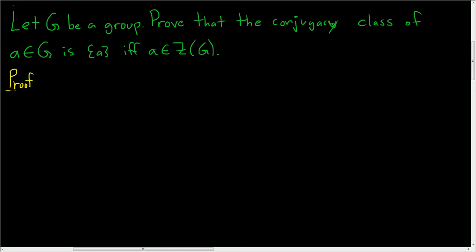There's a lot of terminology and background that's required before understanding this proof. Let's briefly go over it. A is conjugate to B if there exists an X in G such that A is equal to X B X inverse. That's what it means for A to be conjugate to B. It turns out that this notion of two elements being conjugates is an equivalence relation.